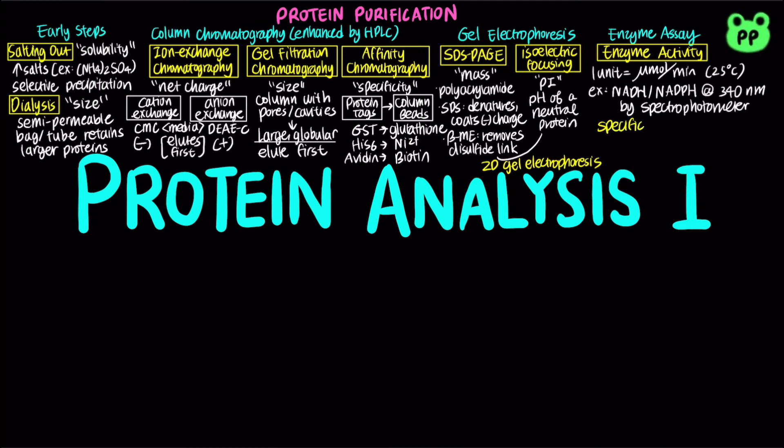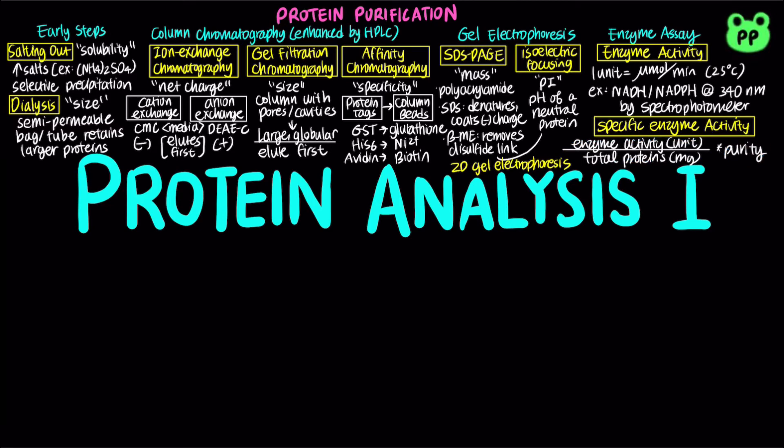In addition to enzyme activity, the total protein concentration is also measured to calculate the specific enzyme activity, which is the number of enzyme units per mg of total protein. The specific activity is a measure of enzyme purity. It increases during purification of an enzyme and becomes maximal and constant when the enzyme is pure.